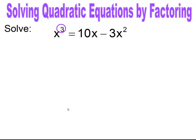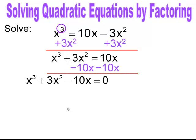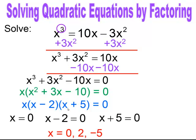Here we have x to the third, so we move everything to the left-hand side. First add the 3x squared, then subtract the 10x. Now factor out the GCF, which is x, giving the quadratic x squared plus 3x minus 10. Factor that into two binomials: x times x minus 2 times x plus 5. Take each factor and set it equal to zero. The solutions are x equals 0, x equals positive 2, and x equals negative 5.